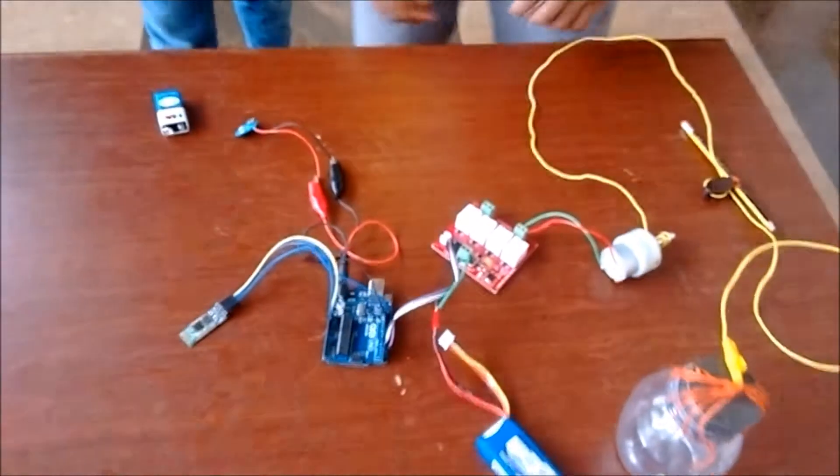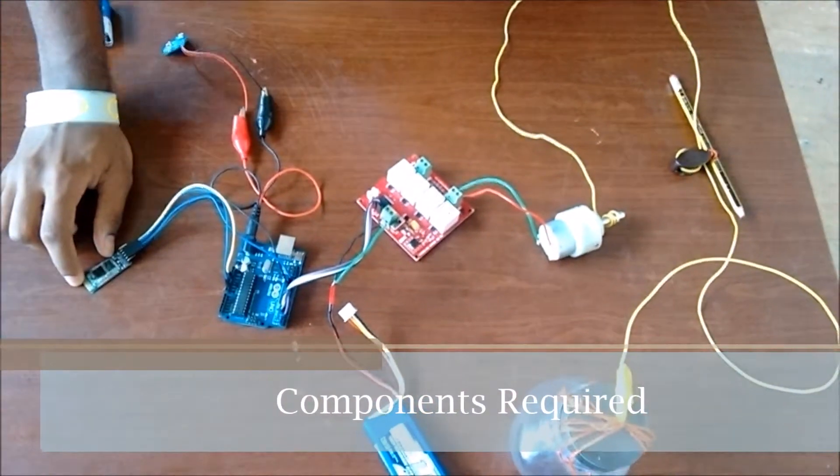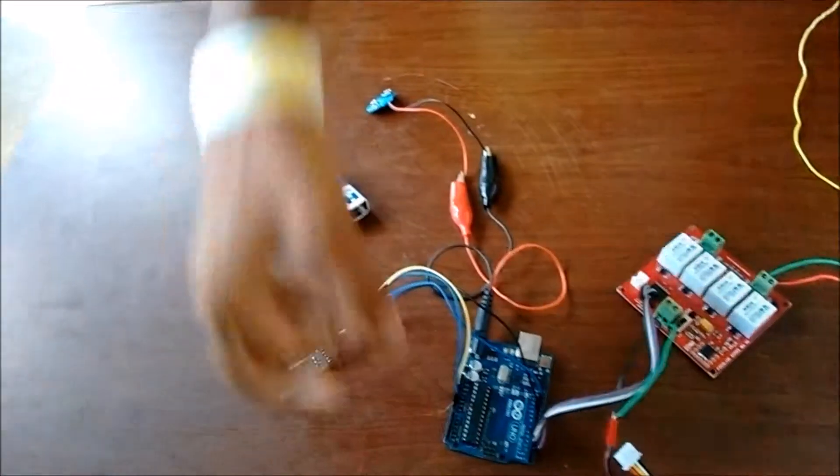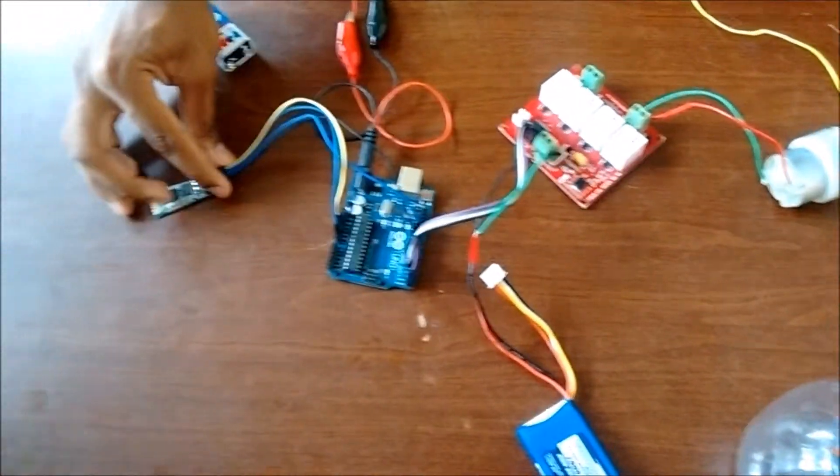So over to the components. Basically we need a Bluetooth module which is HZ05 we are using over here, and this is Arduino Uno R3, and this is a 9 volt battery which we need to power up the Arduino.